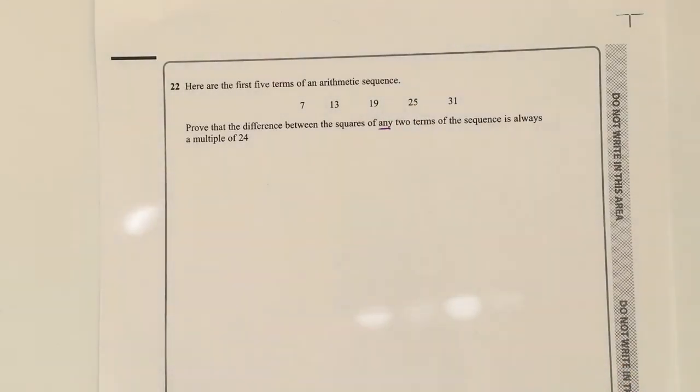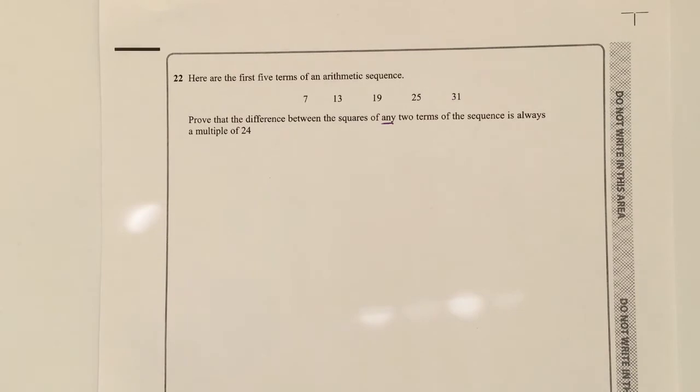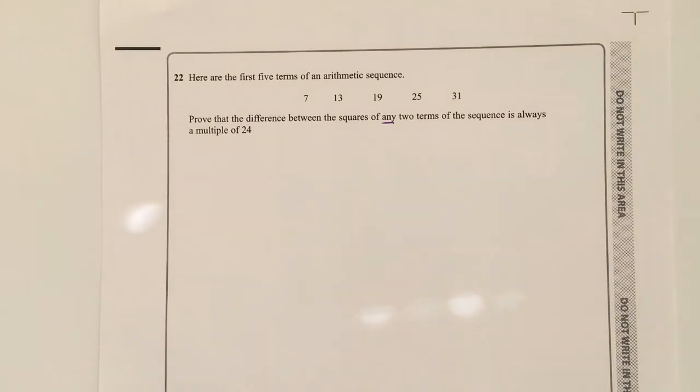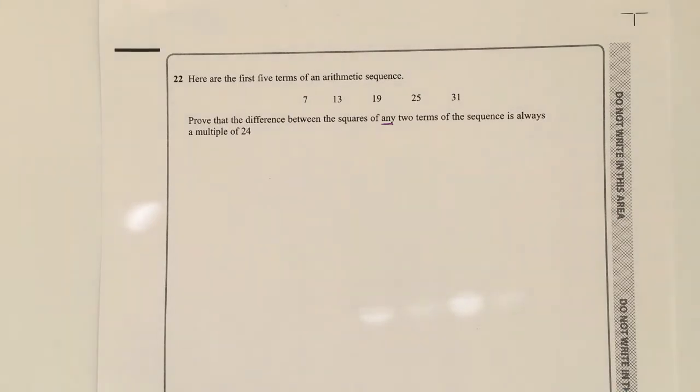To prove that the difference between the squares of any two terms, so it could be that term and that term, is always a multiple of 24 is actually really, really difficult. So I'm going to change this because I think the purpose of the video really is to try to encourage you to have a look at these types of questions, and I'm not sure that this question would have appeared on a GCSE. Bear in mind these are sample papers. So what I'm going to do is I'm going to change that to any subsequent.